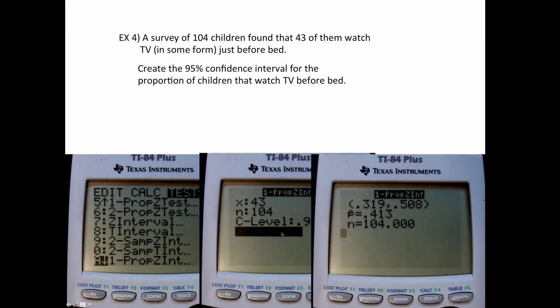And ta-da, it gives you the confidence interval. So somewhere between 31.9% and 50.8% of children watch TV just before bed. There's the confidence interval. So when we did number three and did all those formulas and looking up the chart and stuff like that, it was great fun, but that was mostly just going to be one time we do it the long way to understand where it came from, and from now on we're going to be using the calculator.